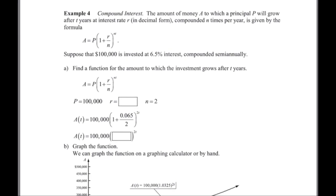This leads us to the compound interest formula. The compound interest shows the amount of money to which a principal P will grow after t years at a particular interest rate in decimal form, compounded n times per year. Suppose that $100,000 is invested at 6.5% interest compounded semi-annually. Our principal P is $100,000, our interest rate is 0.065 in decimal form, and compounded semi-annually means n equals 2 times per year.